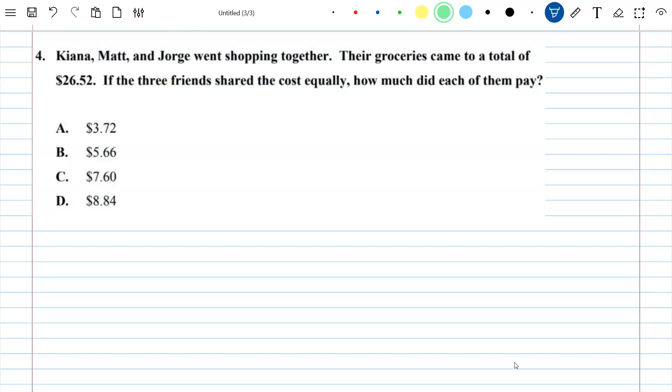Kiana, Matt, and George went shopping together. Their groceries came to a total of $26.52. If the three friends shared the cost equally,